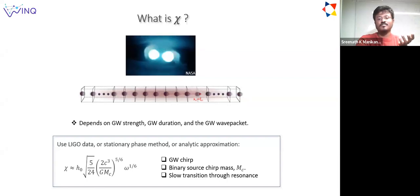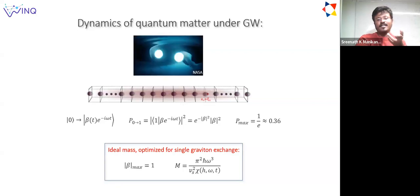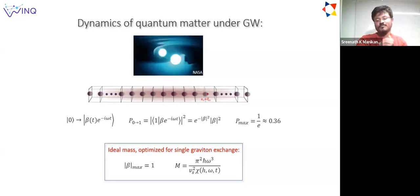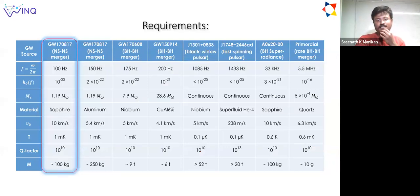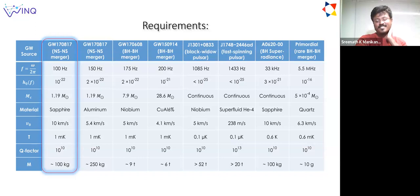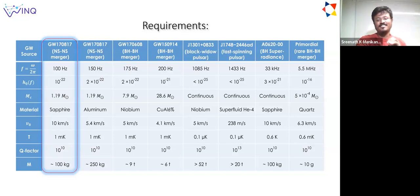We can use these ideas to predict the optimum mass of a detector to maximize absorption from the ground state to the first excited state of the bar resonator. We have a table looking at different events with known or predicted strain amplitudes and what material or mass of bar detector is required to reach this optimum response. The required masses are of the order of 100 kilograms or a few tons—not completely out of the picture and still realizable in near-term experiments. There are already bar detectors which exist in this range.